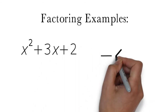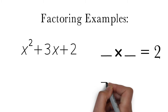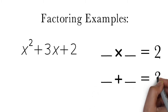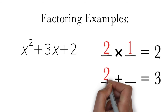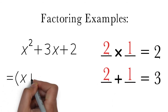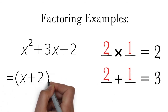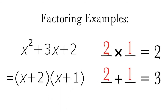Consider the trinomial x squared plus 3x plus 2. To factor this we need to find two numbers that multiply to 2 and add up to 3. The numbers that do this are 2 and 1. Thus we can factor x squared plus 3x plus 2 as a product of the binomials x plus 2 and x plus 1.